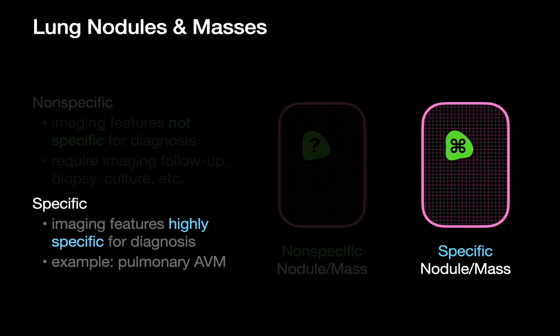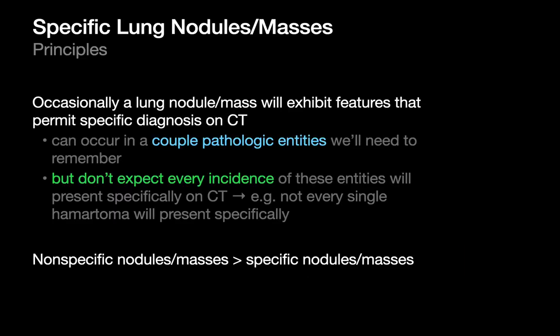Specific nodules and masses are going to be the topic of this talk. Some principles: occasionally we're going to encounter a nodule or mass on a CT scan that has enough information within the image to let us know what it is without having to resort to follow-up imaging or some other test. We shouldn't expect that every time one of these entities occurs, it's going to present specifically.